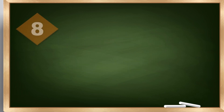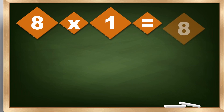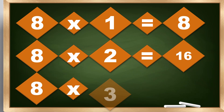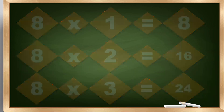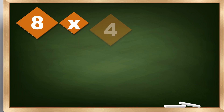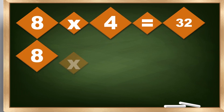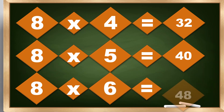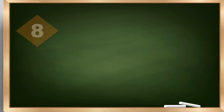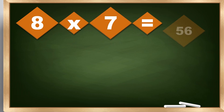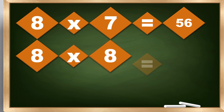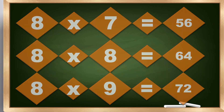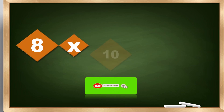8 times 1 equals 8. 8 times 2 equals 16. 8 times 3 equals 24. 8 times 4 equals 32. 8 times 5 equals 40. 8 times 6 equals 48. 8 times 7 equals 56. 8 times 8 equals 64. 8 times 9 equals 72. 8 times 10 equals 80.